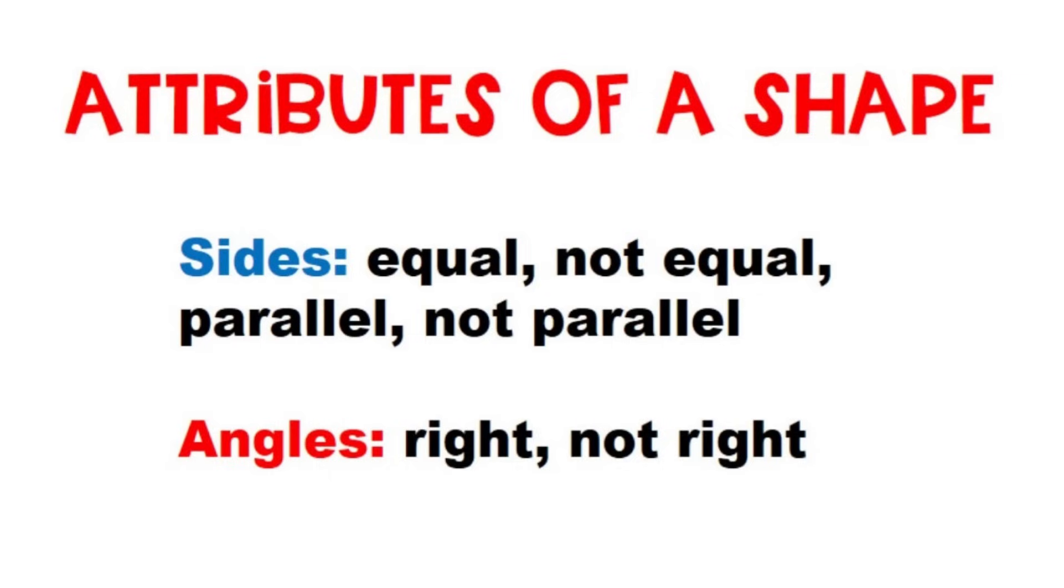Ways to describe the attributes of a shape. Sides can be equal, not equal, parallel or not parallel. Angles can be right or not right.